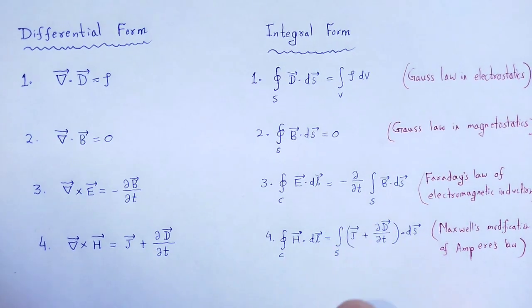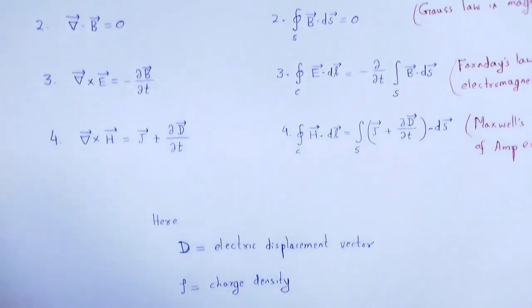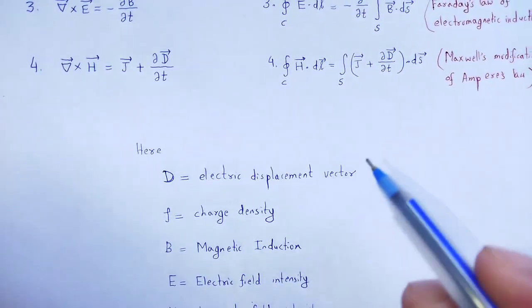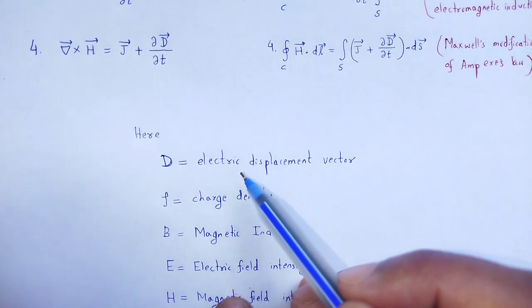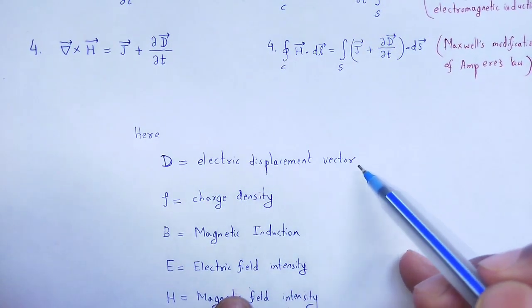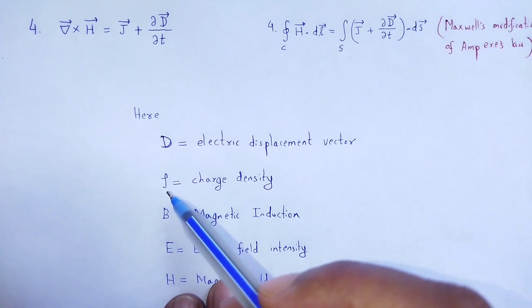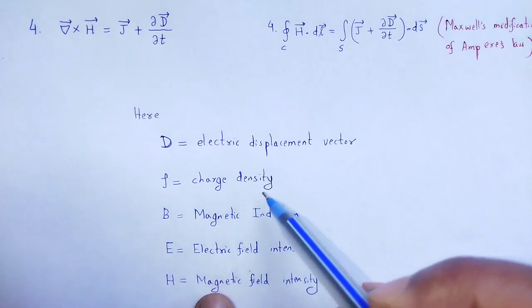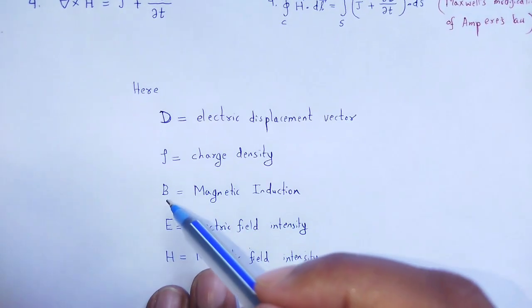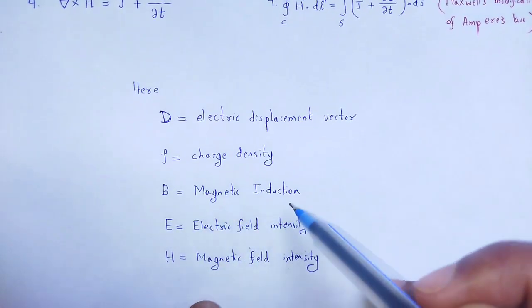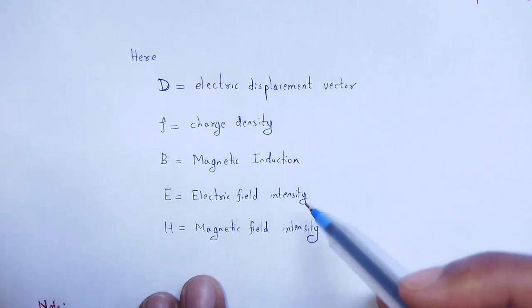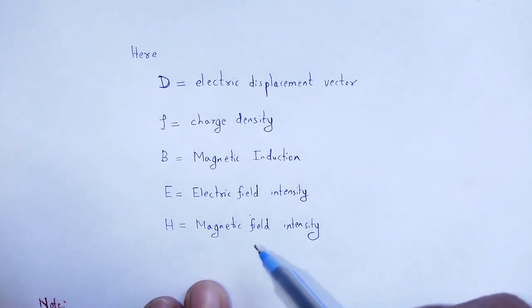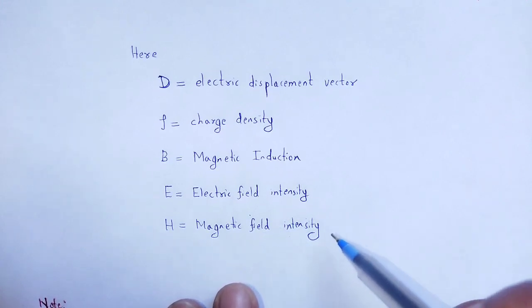In these equations, the term D stands for electric displacement vector, rho stands for charge density, B for magnetic induction, E for electric field intensity, and H for magnetic field intensity.